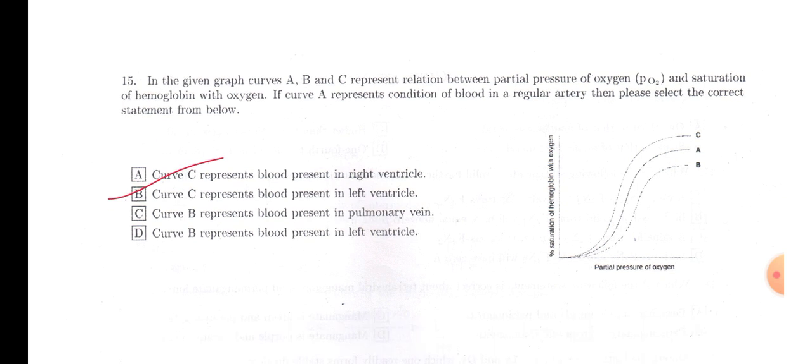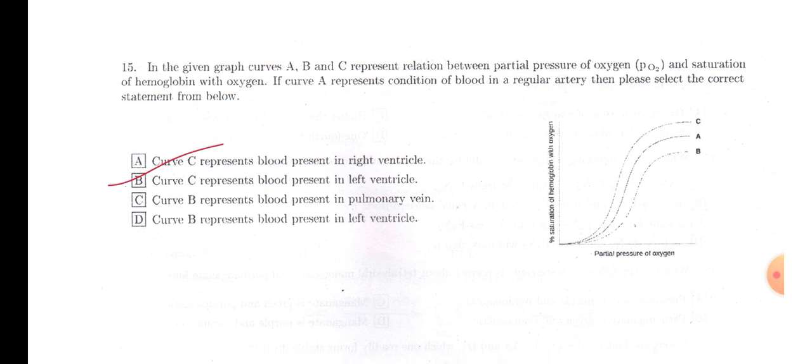In question number 15, there is an oxygen dissociation curve. A is the original curve, C is the left side shifting, and B is the right shift. So when the curve shifts towards the left, we think about the affinity of hemoglobin towards the oxygen is high, or there is more oxygen binding with the hemoglobin. Now see what are the options. You have to select the correct statement.